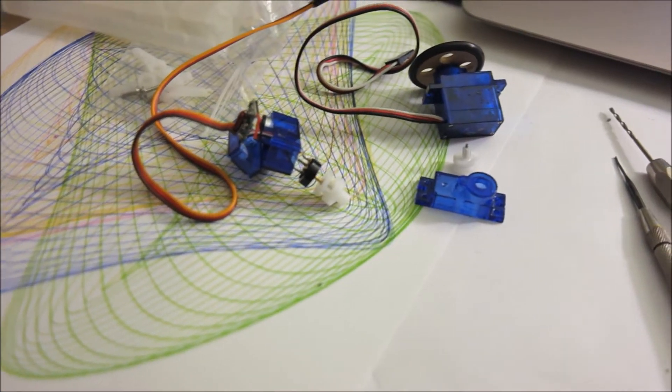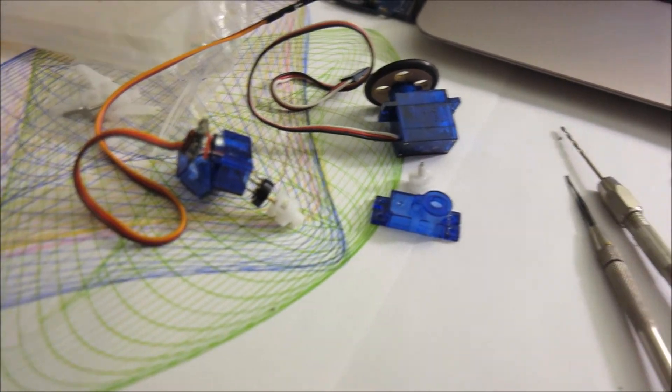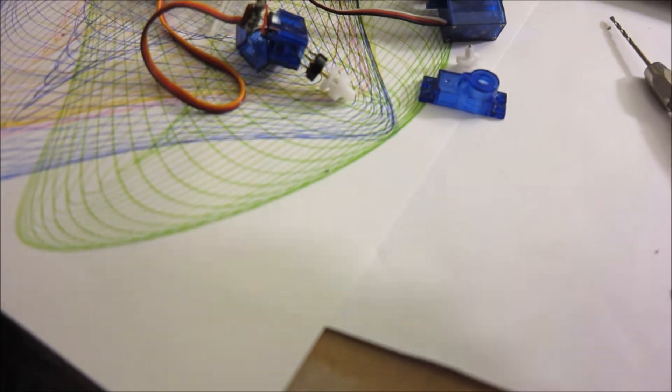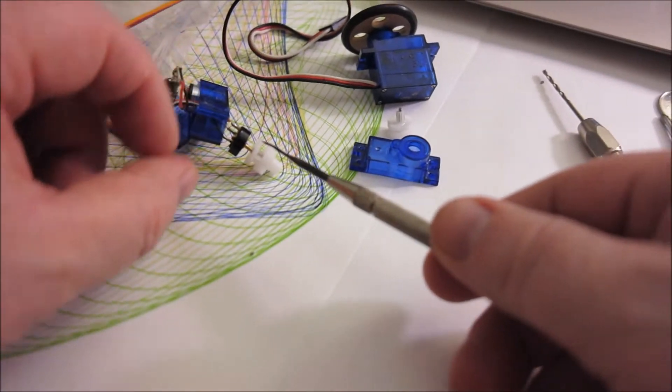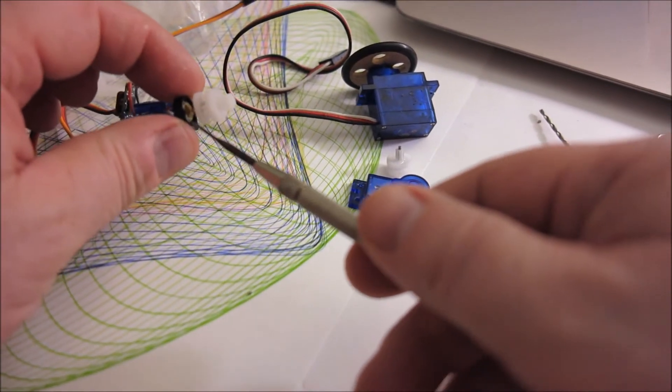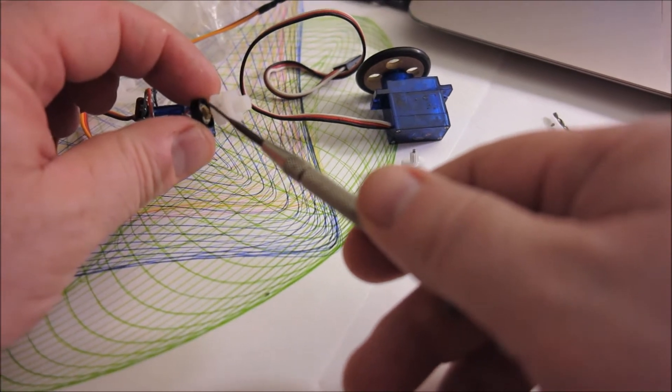We're going to use a glue gun to lock the pot. This area here is where the wipers are in the pot, so very carefully I'm going to put glue in there and that's going to lock the pot in place.